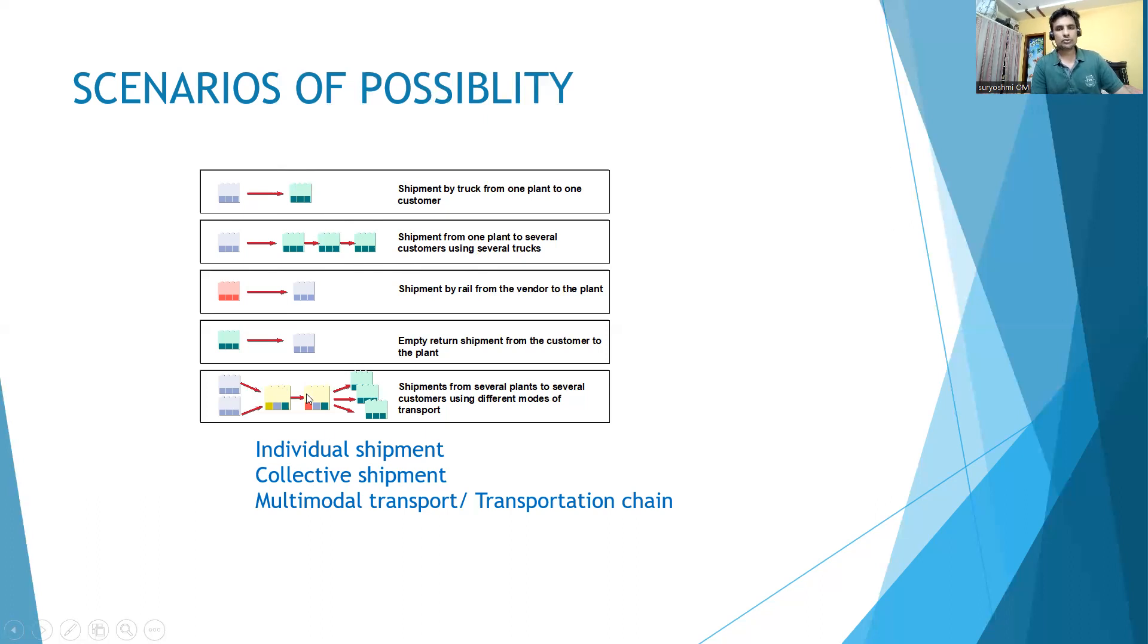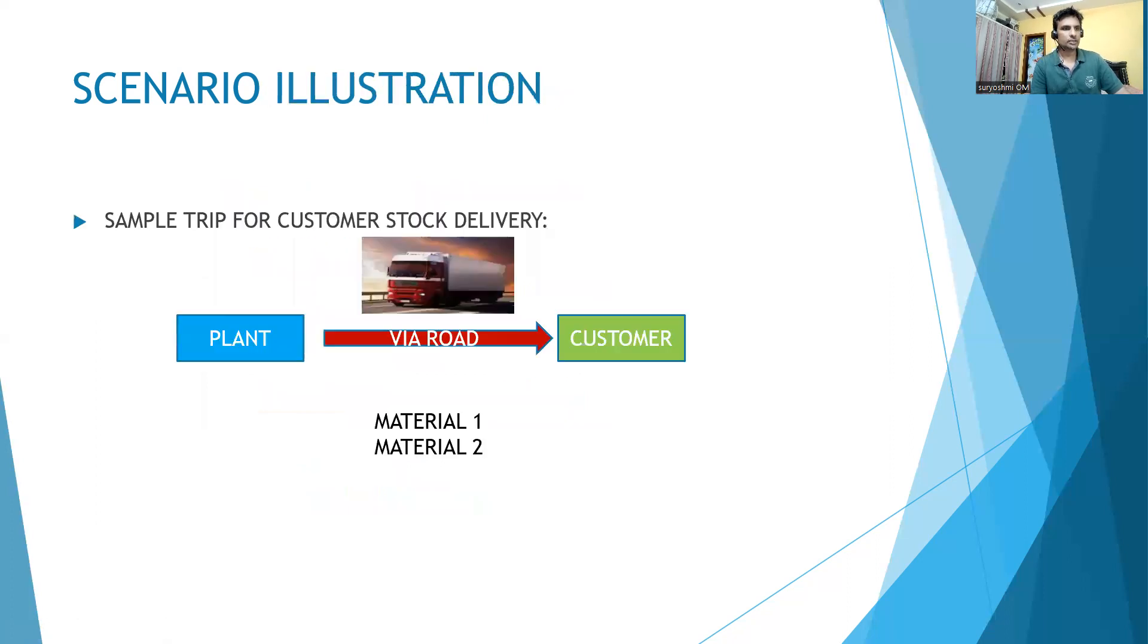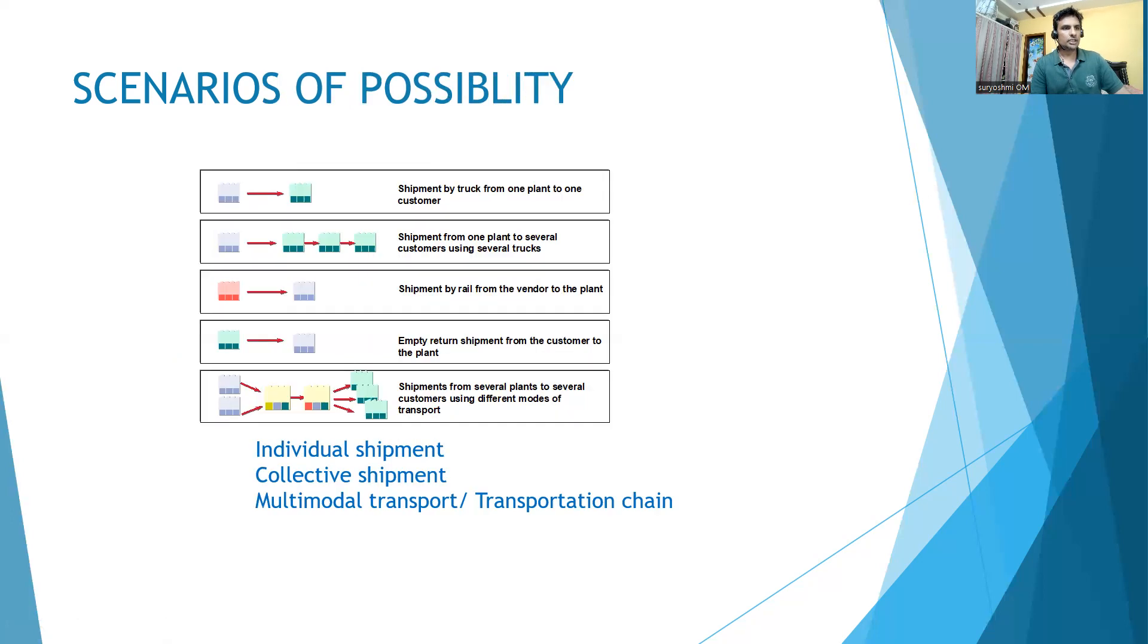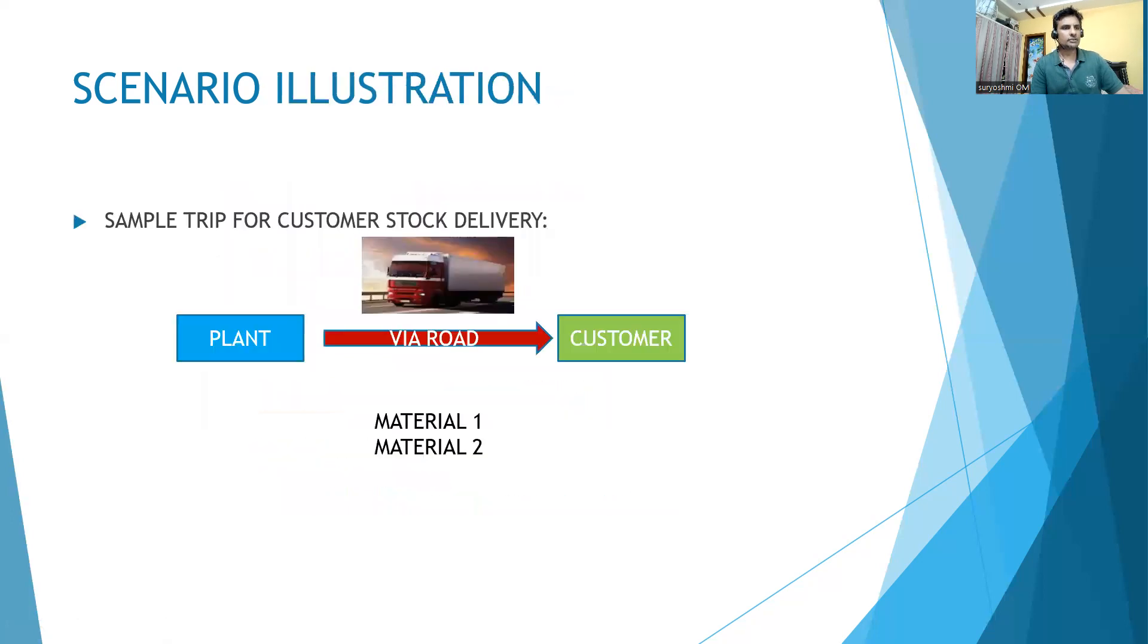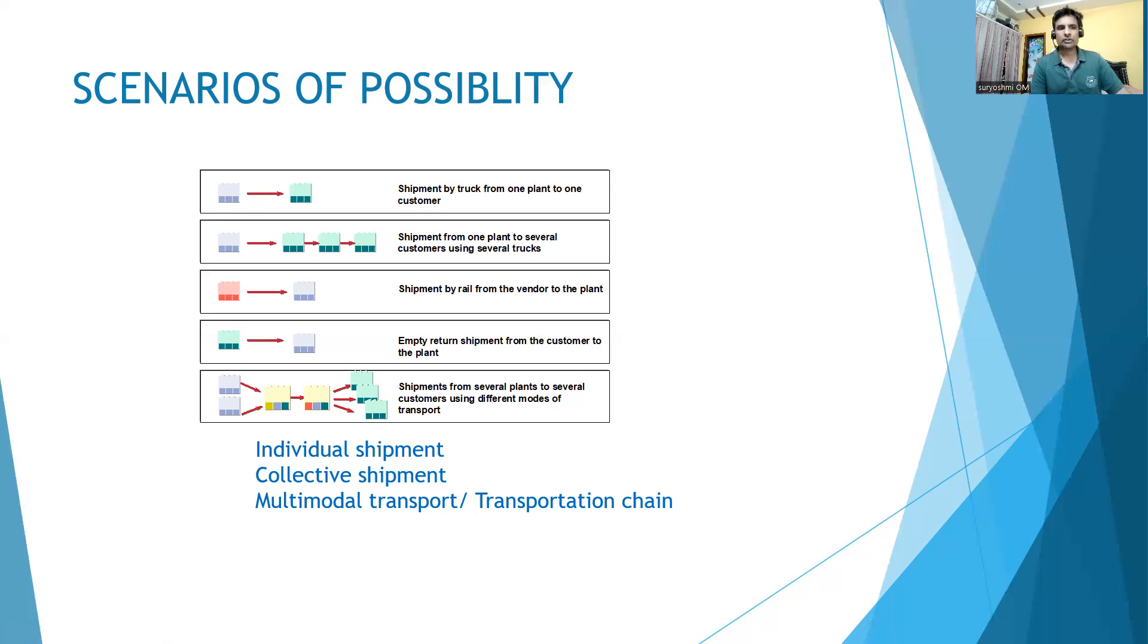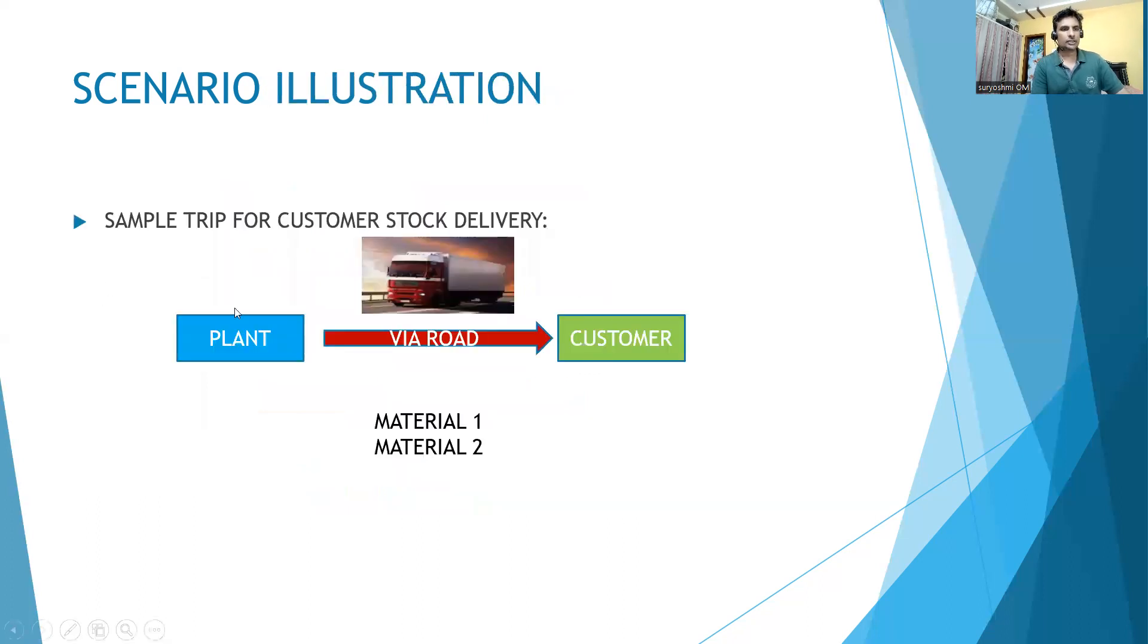These kind of examples will be there. This is not as easy as it looks - it has its own complexity to derive on the system. I think you got a sample illustration and the possibility of scenarios. We'll look into this scenario for our understanding of the end-to-end process. Thank you, we'll catch up in the next session.